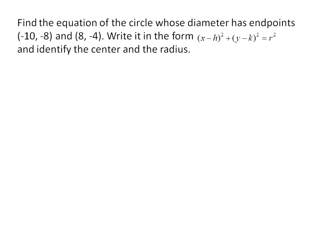Let's look at finding the equation of a circle whose diameter has endpoints negative 10, negative 8, and 8, negative 4. We want to write it in the form x minus h squared plus y minus k squared equals r squared, and then be able to find the center and radius.